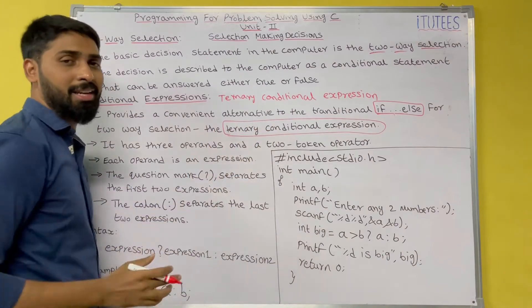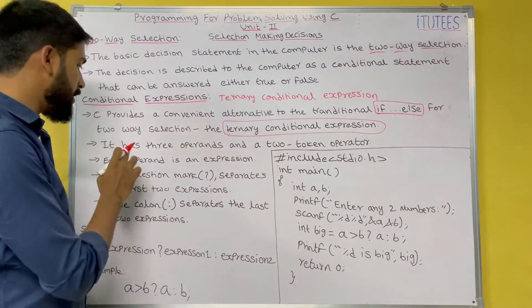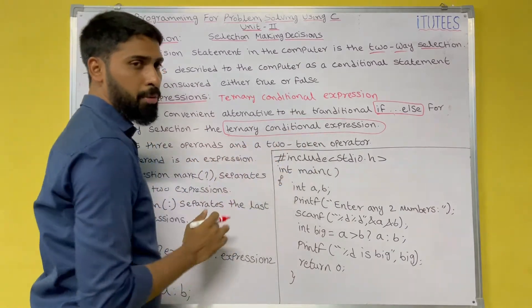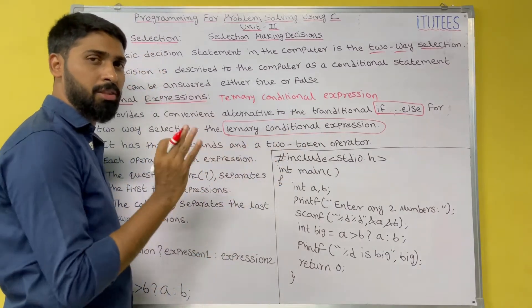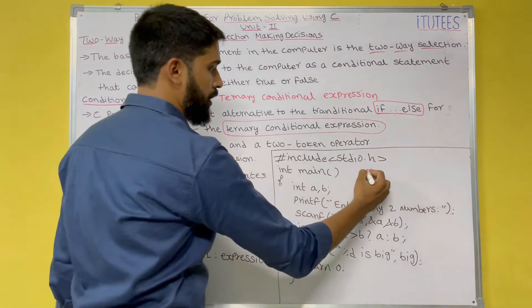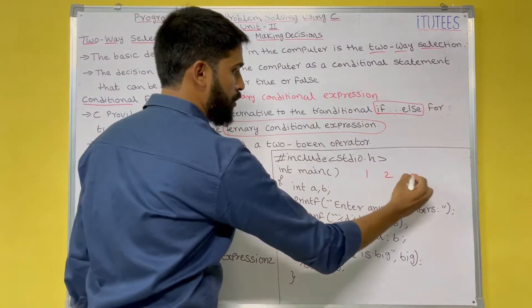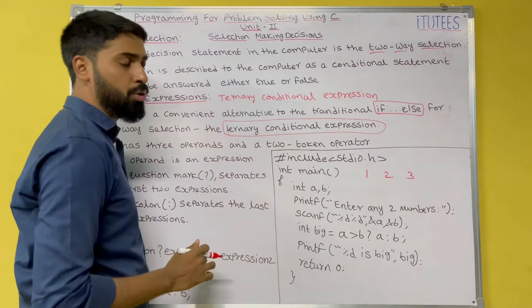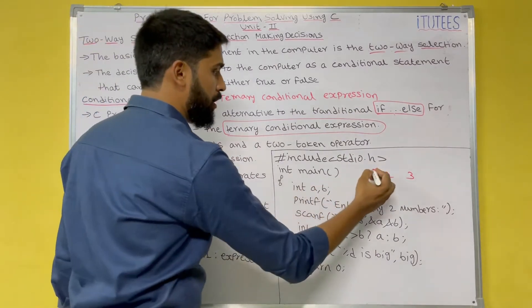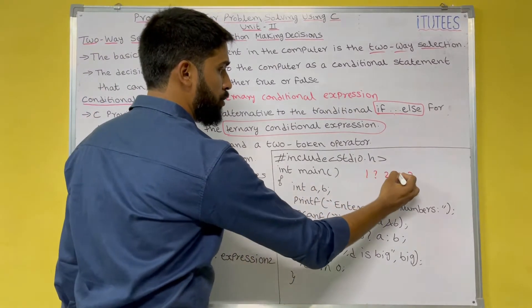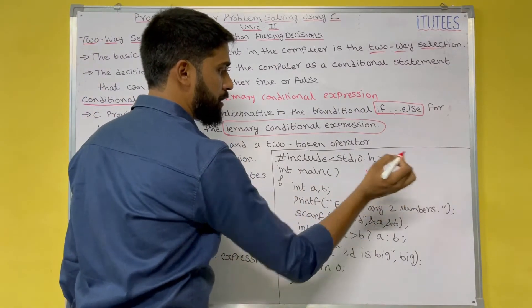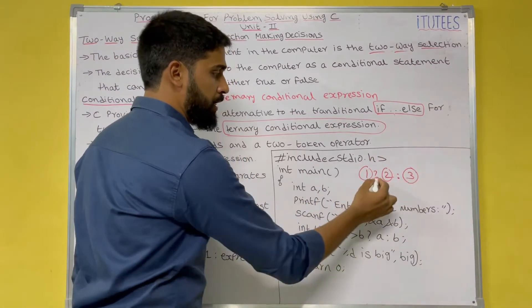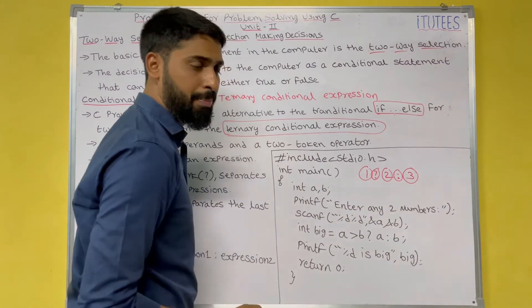The ternary conditional expression has three operands and two token operators. So how many operands? Three operands — one, two, three — and two operators. These three are the operands and these two are the operators.